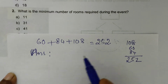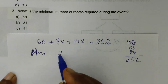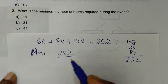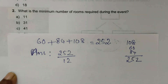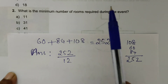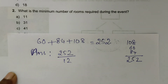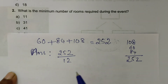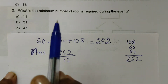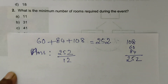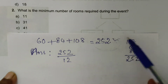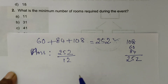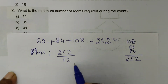The minimum number of rooms required equals the total number of participants divided by the maximum per room. Total participants are 252, divided by 12. We get the answer for the minimum number of rooms required.